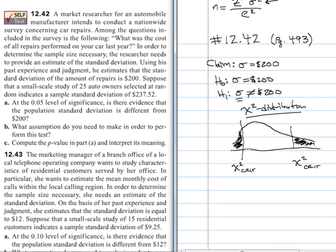To remember what's happening here, the sample size is going to be important. Because to get the critical value for the chi-square distribution, we're going to need the degrees of freedom, which is n minus 1. In this problem, the sample size is 25, so n equals 25, and degrees of freedom is 24. We also have some sample statistics: the sample standard deviation is $237.52.